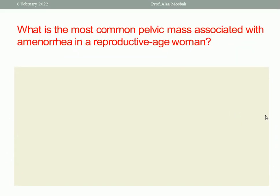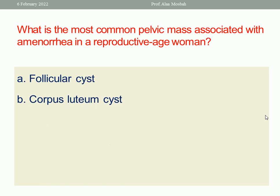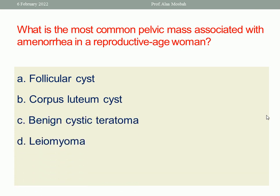Next question: what is the most common pelvic mass associated with amenorrhea in a reproductive-age woman? Options: follicular cyst, corpus luteum cyst, benign cystic teratoma, leiomyoma, or pregnancy? We are looking at a reproductive-age woman associated with amenorrhea, so the first possibility would be pregnancy. The correct answer is pregnancy.